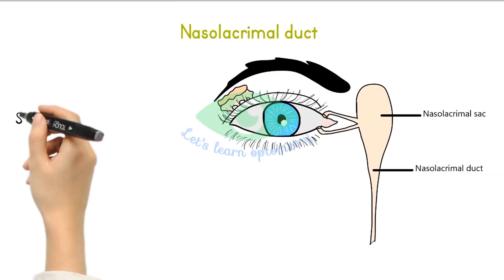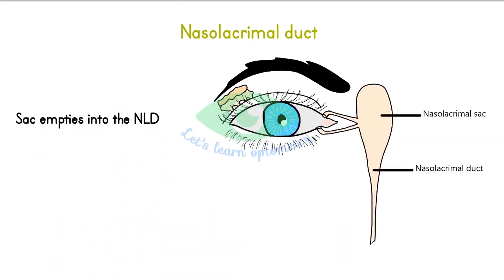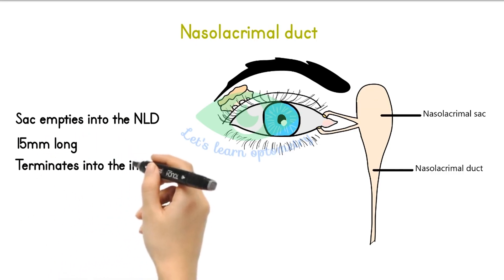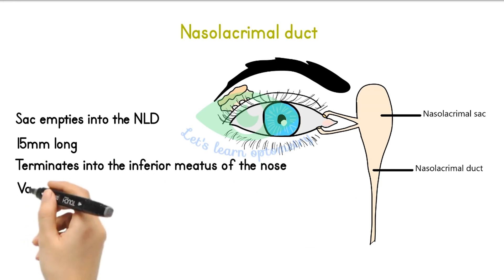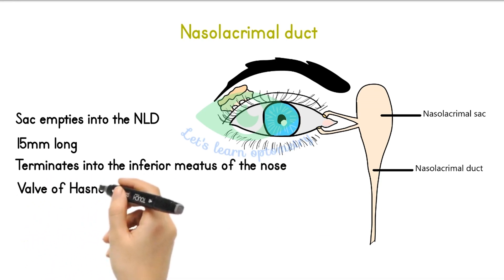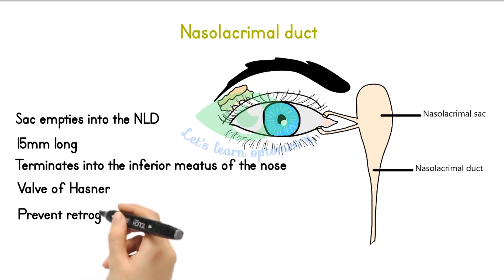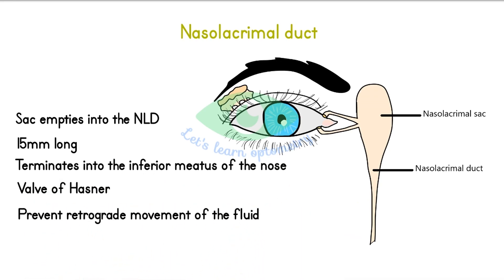The nasolacrimal duct: the lacrimal sac empties into the nasolacrimal duct just as it enters the nasolacrimal canal in the maxillary bone. The duct is approximately 15 mm long and terminates in the inferior meatus of the nose. At this point, the valve of Hasner is found. This fold of mucosal tissue prevents the retrograde movement of fluid up the duct from the nasal cavity.